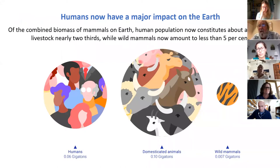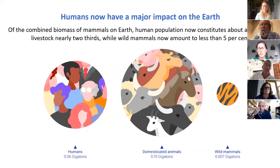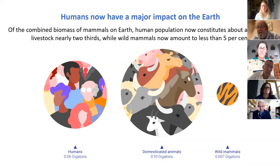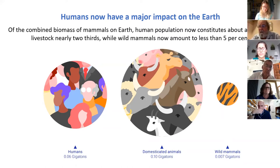The mass distribution on Earth has changed dramatically. Humans now account for about one third of all mammal biomass on Earth, livestock nearly two thirds, and wild mammals are literally only five percent or less.